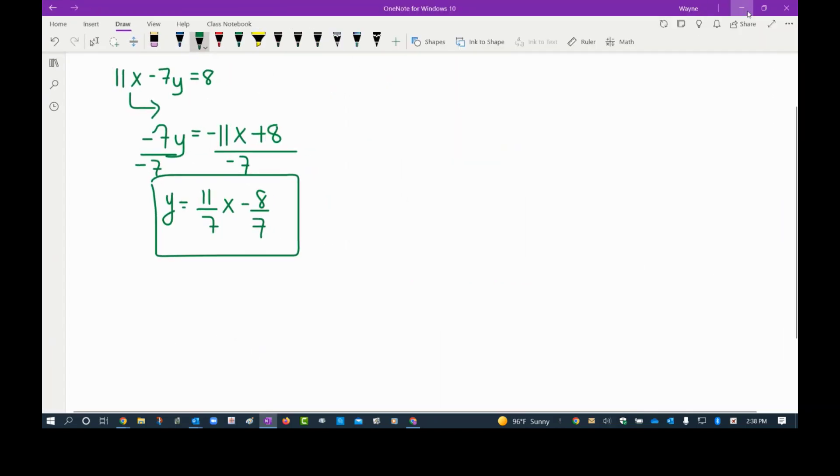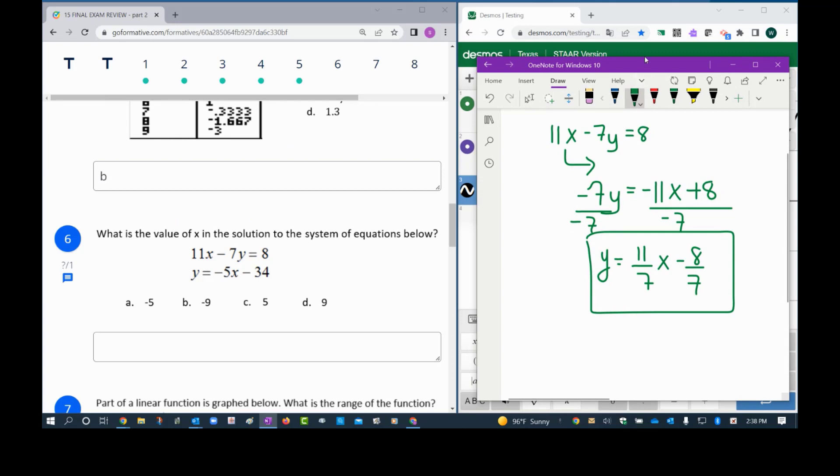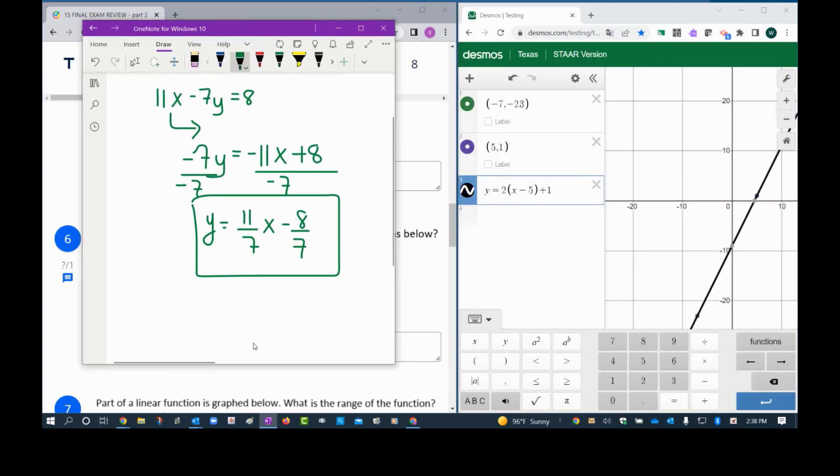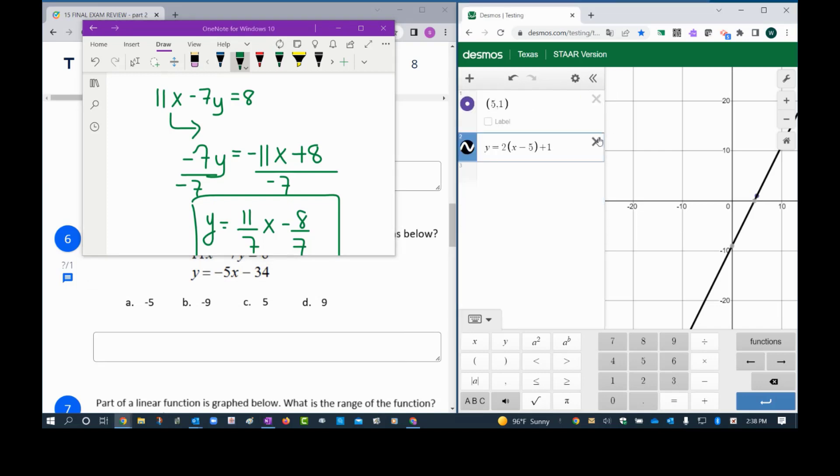We divide both sides by negative 7, so this would be y equals 11 over 7x, and this would be negative 8 sevenths. So right there I have one y that is alone.